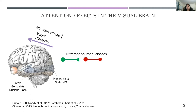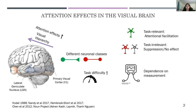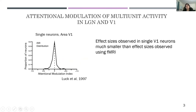Attention effects also vary within the same structure — they differ across neuronal classes, vary with task difficulty where attention facilitation is higher with increasing task difficulty, and also vary depending on the task relevance of the neuronal responses. Interestingly, effects also vary with the measurement used to capture neuronal activity.